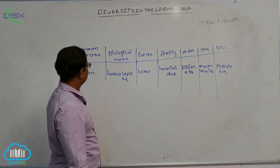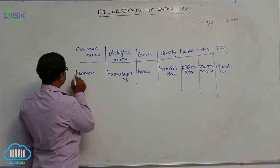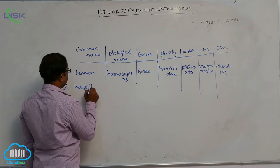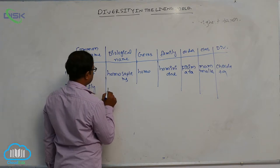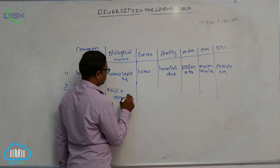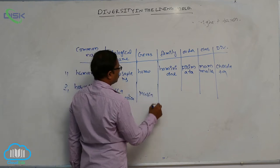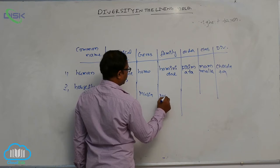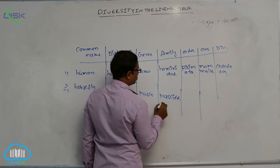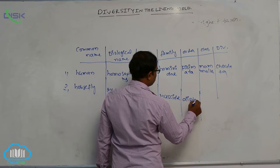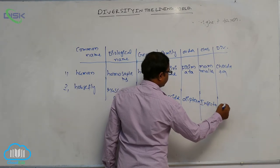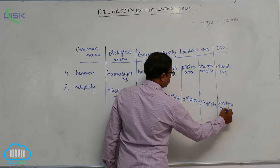Second one is housefly. Biological name: Musca domestica. Genus: Musca. Family: Muscidae. Order: Diptera.